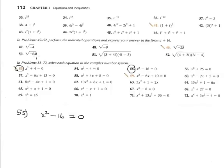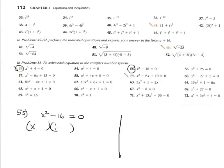Problem 55 is similar but the difference is a minus sign. When it is minus, the answer is real. One way to solve it is by factoring — it is a difference of squares. Factoring gives (x + 4)(x - 4), since square root of 16 is 4, set equal to 0.